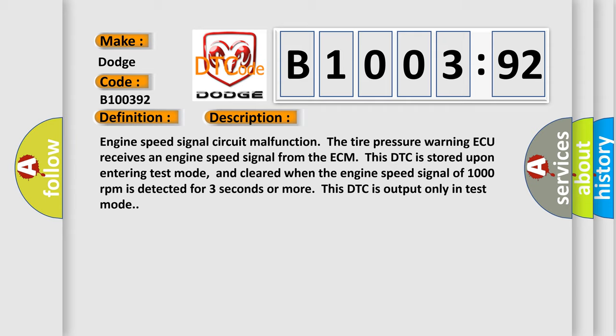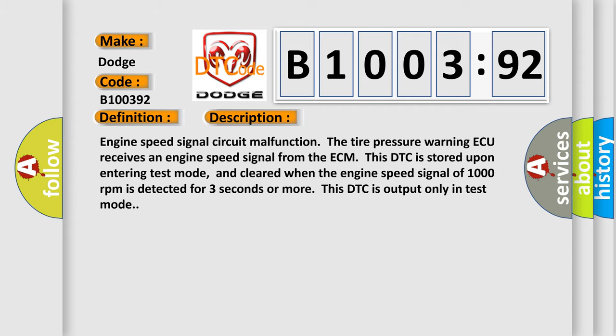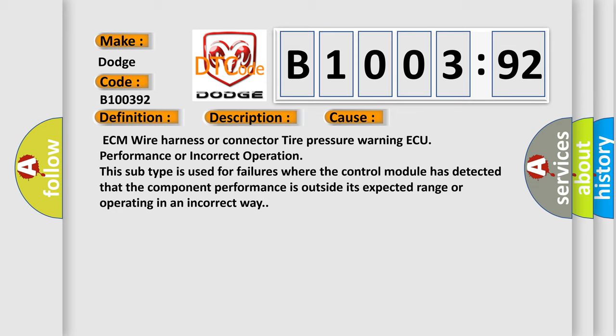This diagnostic error occurs most often in these cases: ECM wire harness or connector, tire pressure warning ECU performance or incorrect operation. This subtype is used for failures where the control module has detected that the component performance is outside its expected range or operating in an incorrect way.